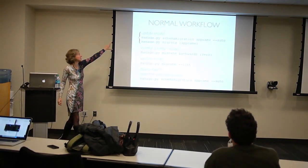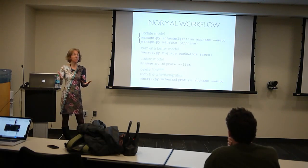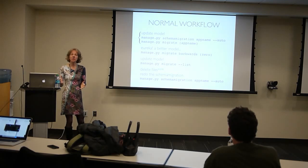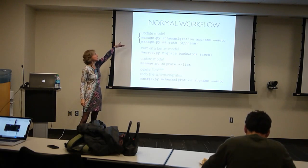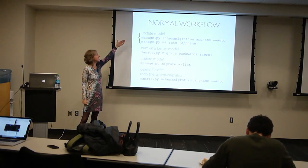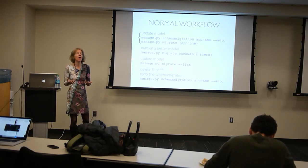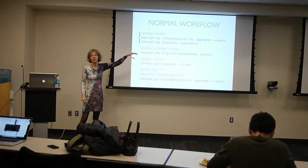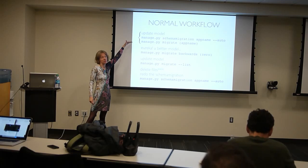Your normal workflow when working with South: you write some code, update your model file, and if you update your model file you want to create a schema migration. Then you want to migrate — run that schema migration file. This will repeat over and over — change your model, do schema migration app name dash dash auto. Auto just means automatically create one for me — that's not the initial one. Then migrate, which runs that file and actually changes your database. So until you say migrate, it doesn't actually change the database — it just creates the file.